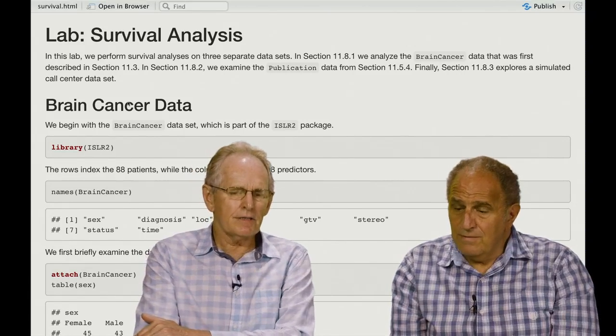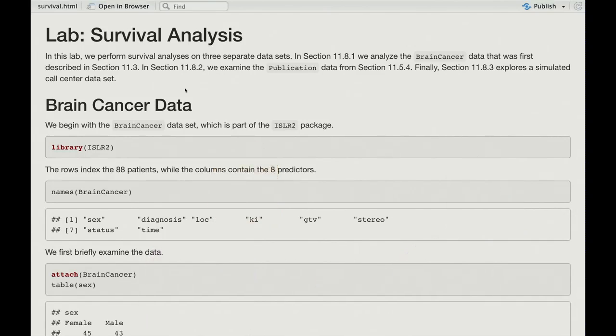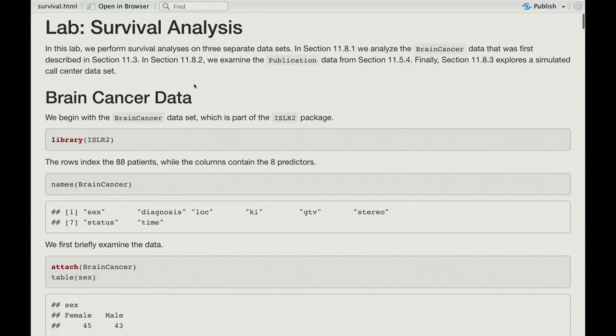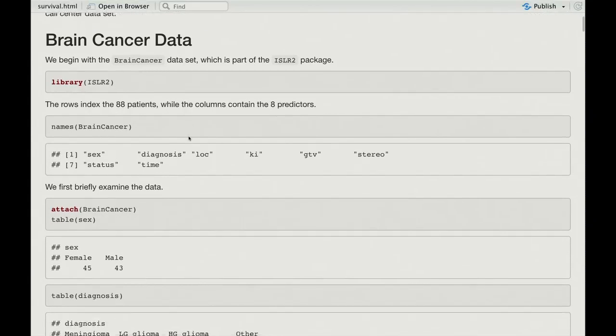Okay, great. So these data are in the ISLR2 package. And this lab we're going to do a little differently. Instead of actually stepping through the code, we're going to take the output of the markdown, which is a nice HTML file. And this looks very similar to what you have in the chapter in the book, except it's got the output as well shown, the plots and whatever are shown as well. And it looks really nice. So the brain cancer data is in the package, as we say. And we say names and here are the names.